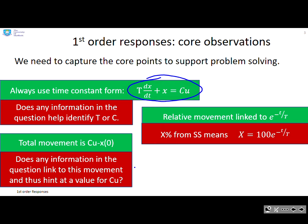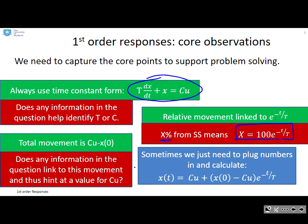The relative movement is linked to the dynamic term e to the minus time over time constant. So if you've moved x percent, you're x percent away from steady state, and you can use that formula to work out time. Sometimes we just need to plug the numbers into the formula to solve for x(t).